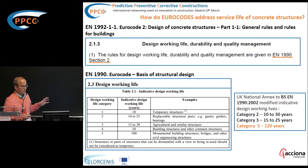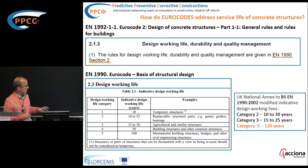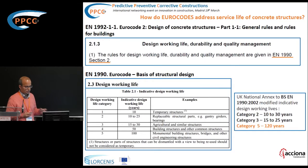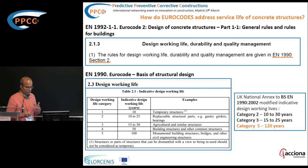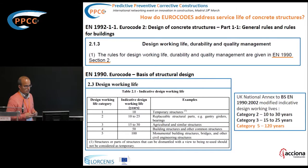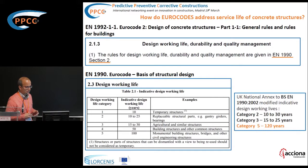In this table, five different categories are defined, giving the indicative design working life. The first category is for temporary structures — only 10 years required. The second, from 10 to 25 years, is for replaceable structural parts like bearings. The third, 15 to 30 years, is for agricultural and similar structures. Category 4 is 50 years for building structures and other common structures. Category 5, for infrastructures, monumental buildings, bridges and other civil engineering structures, has an indicative design working life of 100 years.